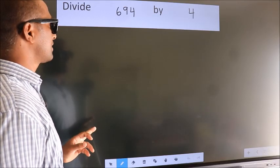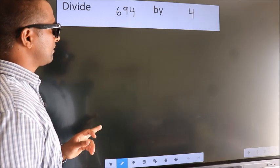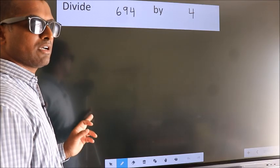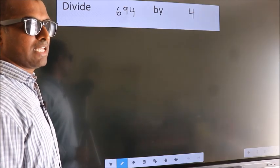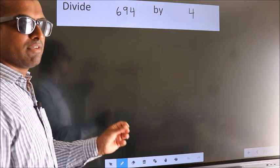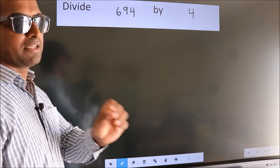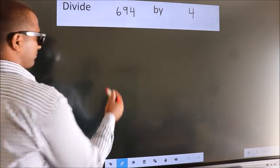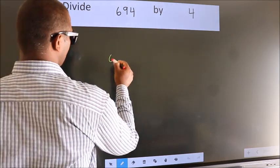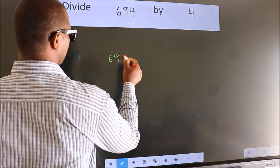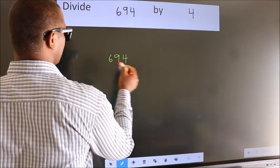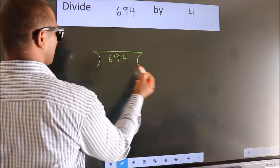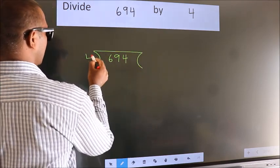Divide 694 by 4. To do this division we should frame it in this way: 694 here, 4 here.